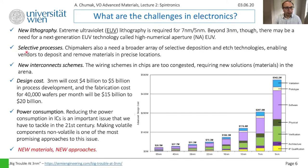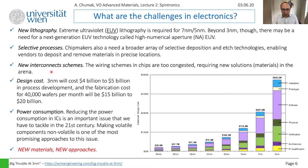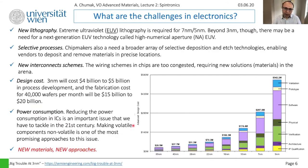They also need selective processes: when working with different materials you need different deposition and etching technologies depending on the material, and it's all getting very complicated. There are also problems with interconnects — all these chips are full of different wires connecting billions of elements, and you need to account for signal delay and parasitic capacitances. Power consumption also increases as you pack in more elements, and removing Joule heat becomes a major challenge.